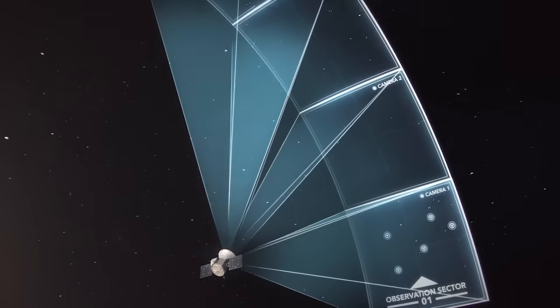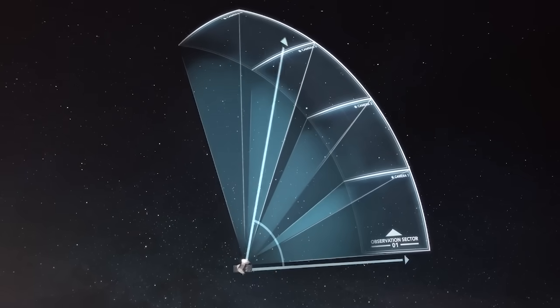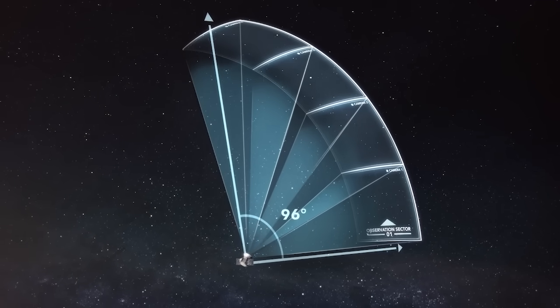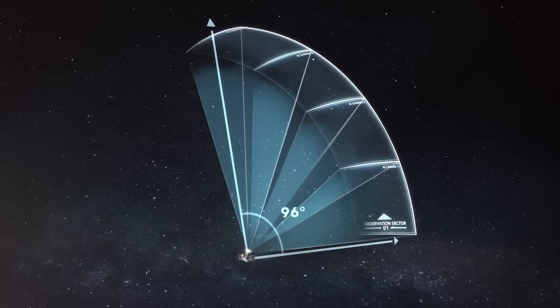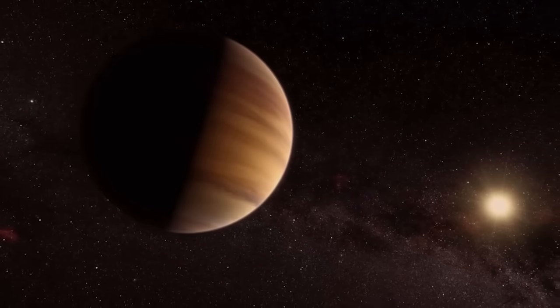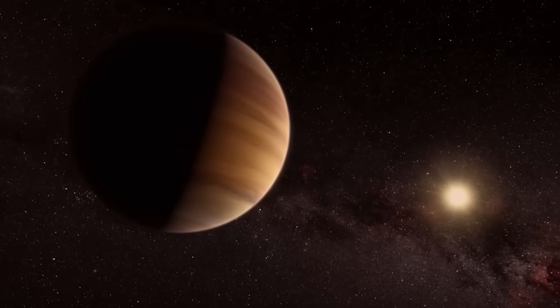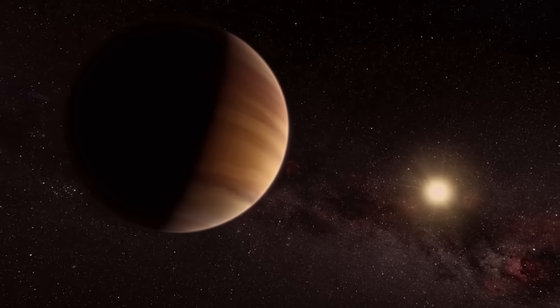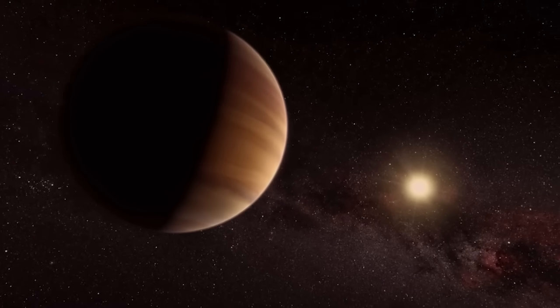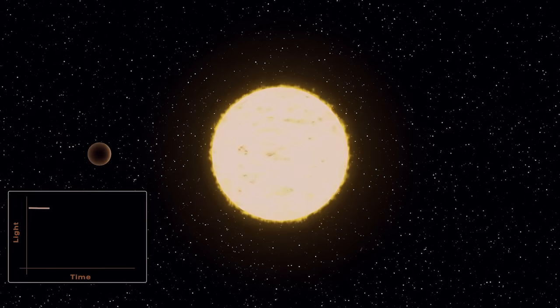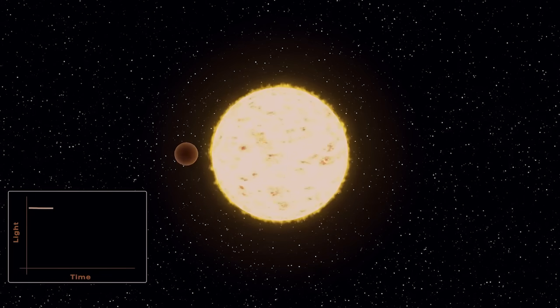It hypothesized the existence of this exoplanet by observing a decrease in the brightness of its star, which could suggest that a planet was orbiting it. James Webb was then able to confirm its presence with a transit method. That is to say, by observing the passage of LHS 475 b in front of its star.